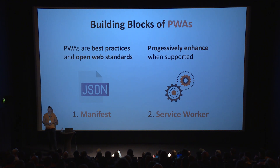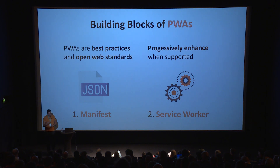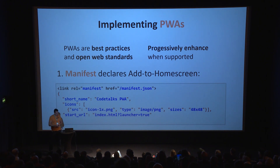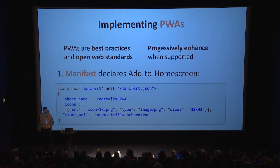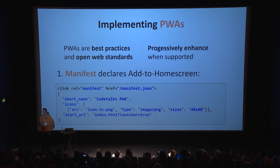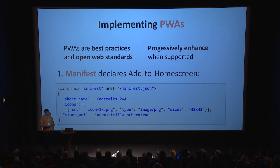The 'progressive' name stems from when you have service workers in your browser — using an up-to-date browser, you get them; when you do not, it degrades to a version that is still usable but doesn't have the nice features. The manifest is very simple: you have a link header in your HTML where you reference a JSON file. In that JSON file you can define your icon in different resolutions, how your app behaves when started, what the splash screen looks like, and whether you want full screen mode or a browser bar.